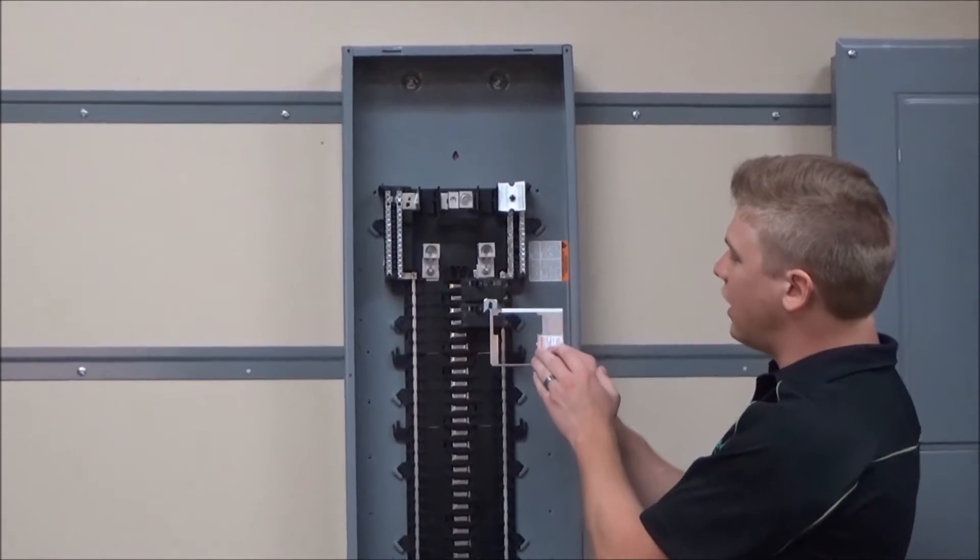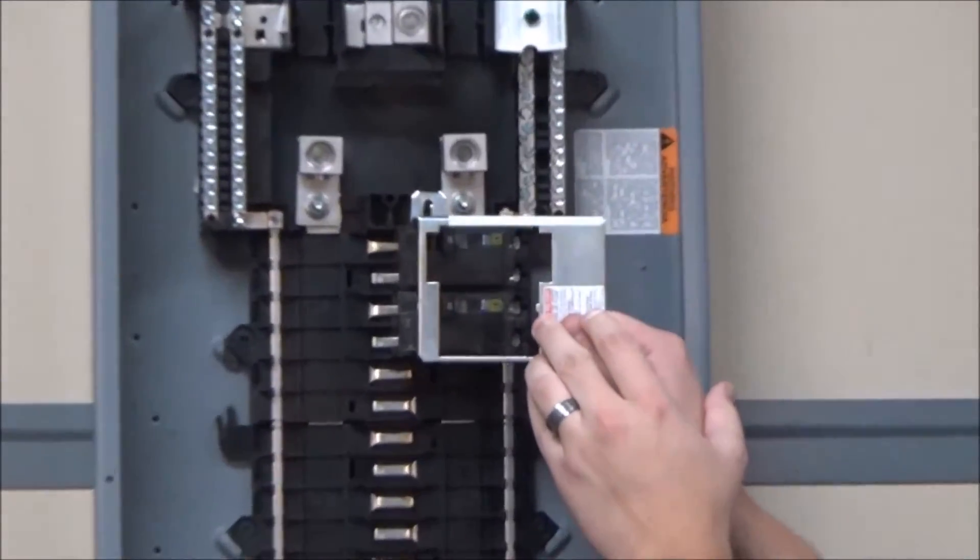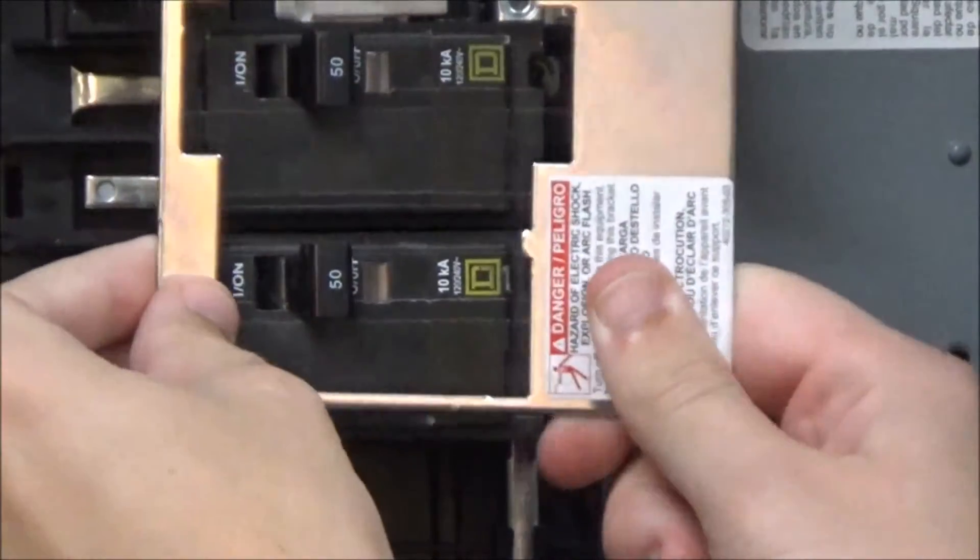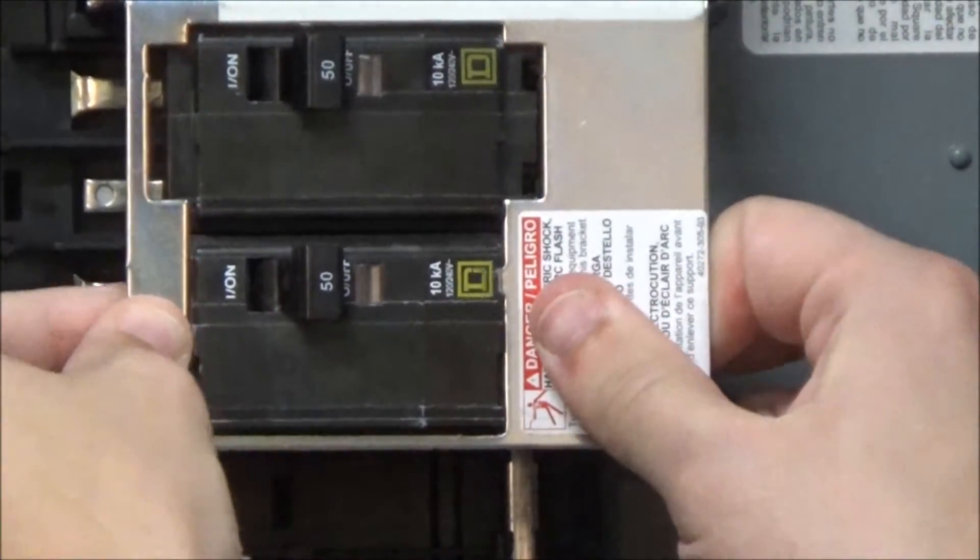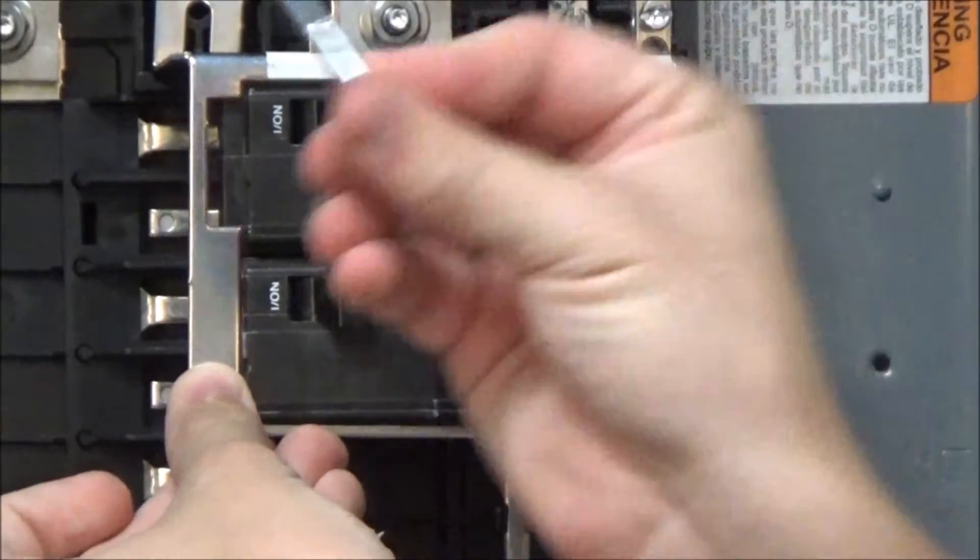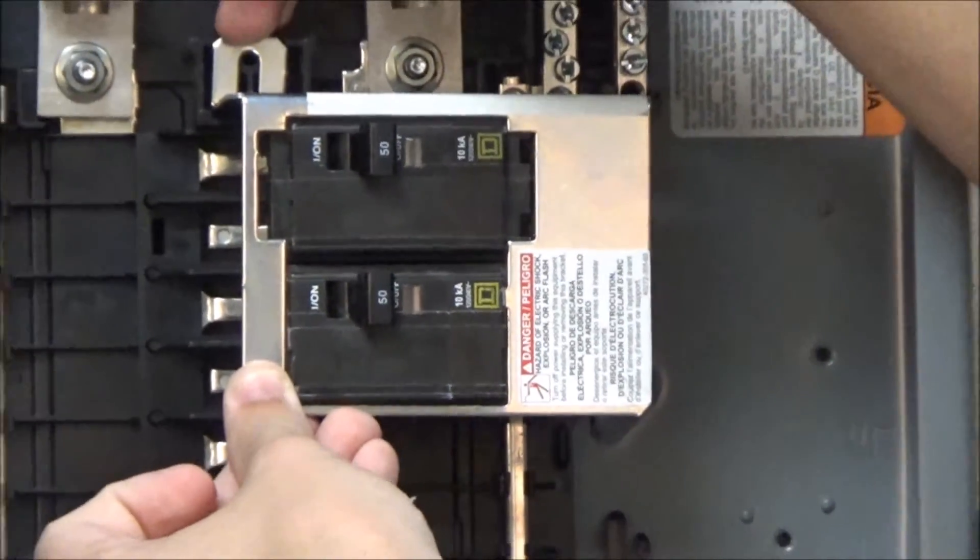There is a small tab right here that will fit into a slot in this bottom breaker. And then you'll install the interior mounting screw into this hole.